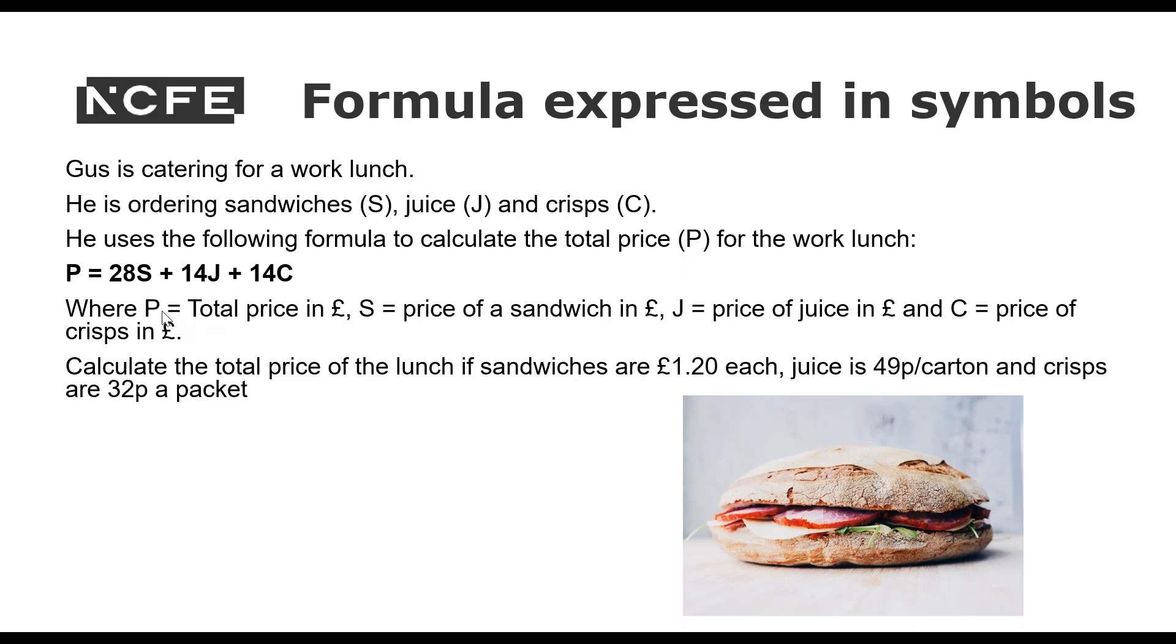Calculate the total price of the lunch if the sandwiches are £1.20 each. Juice is 49 pence a carton and crisps are 32 pence a packet. So first we substitute in the values. So we've got 28 times 1.2 plus 14 times 0.49. So we've got to remember here where we're converting everything into pounds. We're putting everything in the same units and then 14 times 0.32.